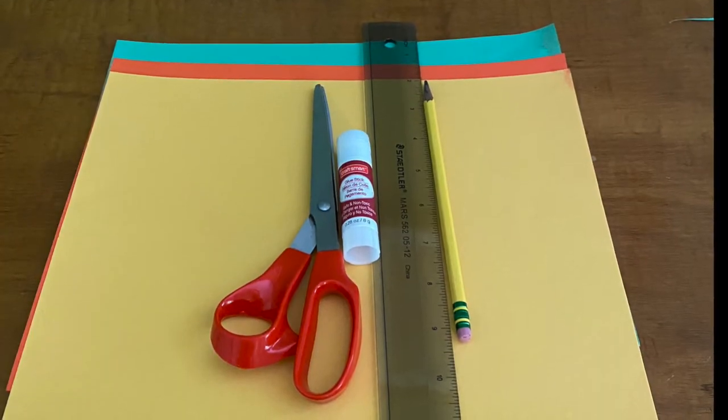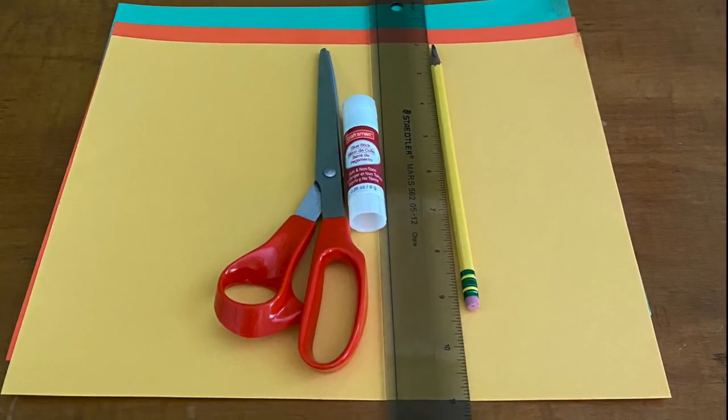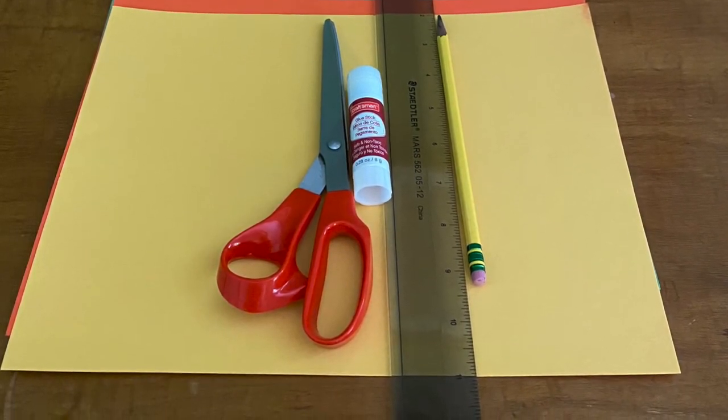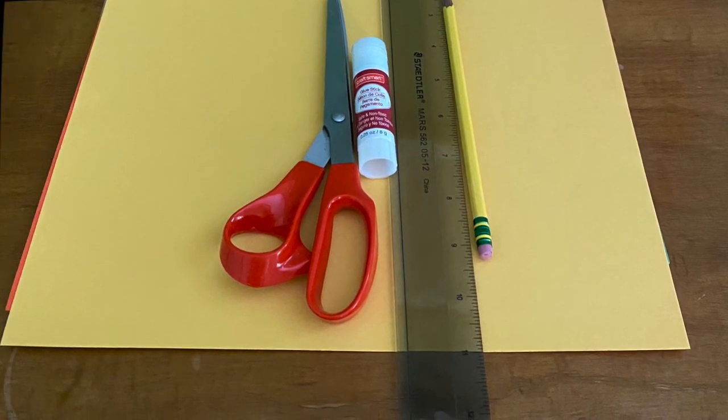To make your own paper weaving project, you will need colored construction paper. Feel free to choose the colors you like best. Scissors, glue, a ruler, and a pencil.